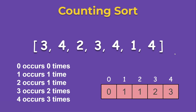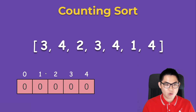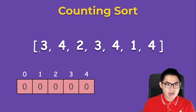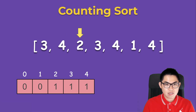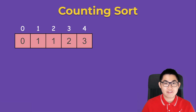In the code, the count array is initially filled with zeros. We start at the first number, three — we increment index three to one. We see a four, so that becomes one. We see a two, so index two becomes one. We see three again, so we increment that to two. Then we see a four, incrementing to two. We see a one, incrementing to one. Finally we see a four again, incrementing that to three.